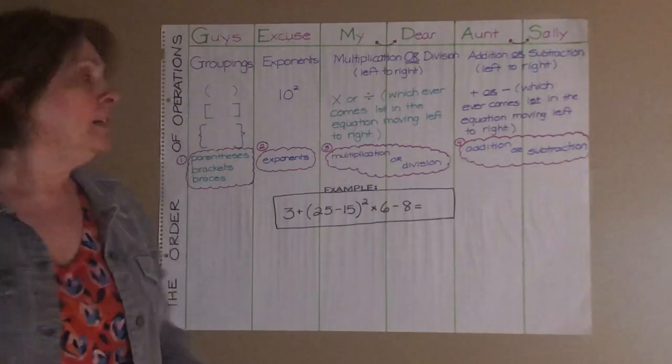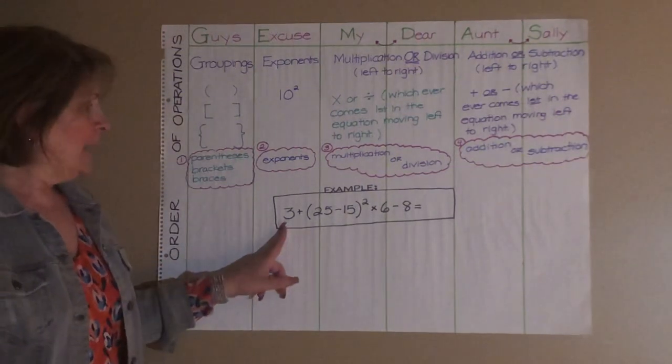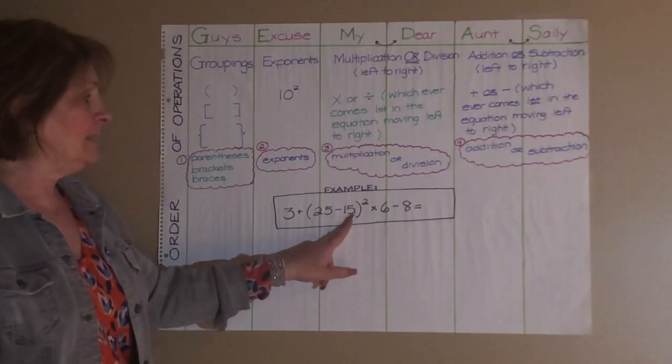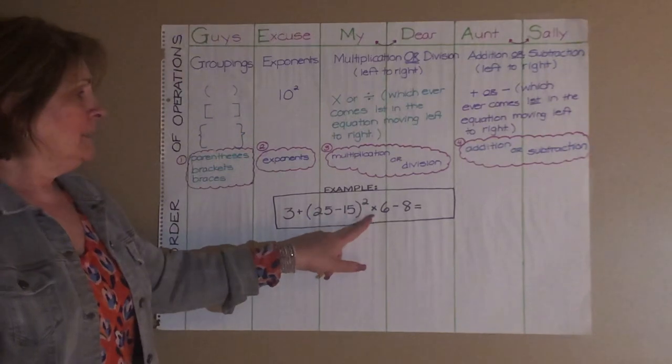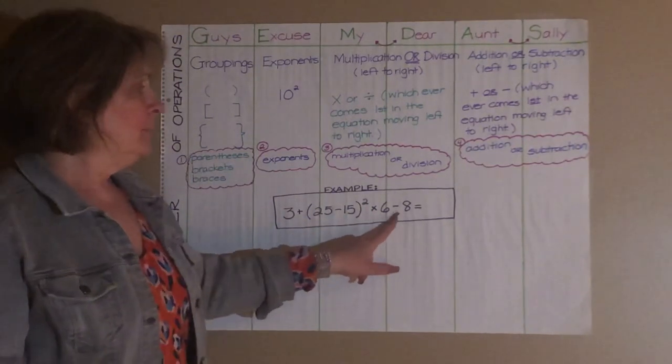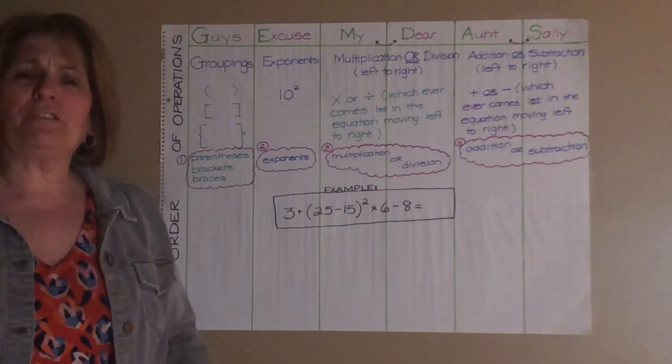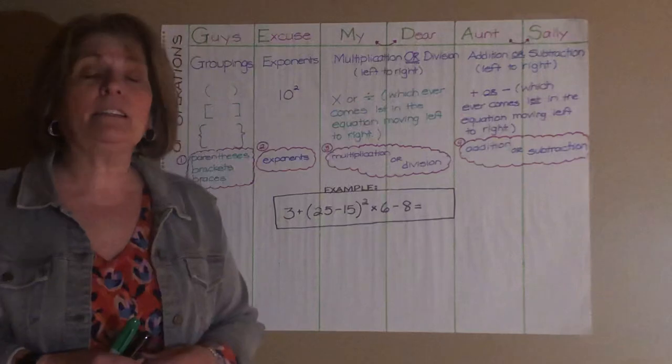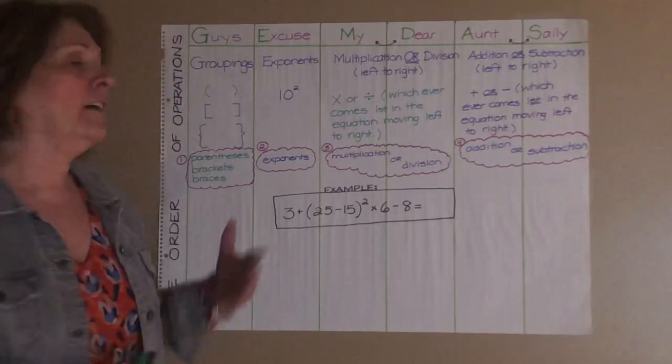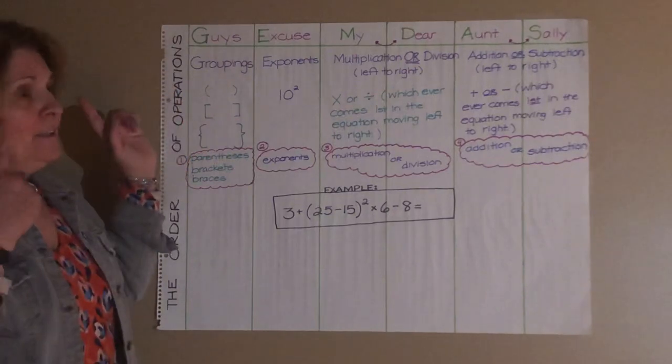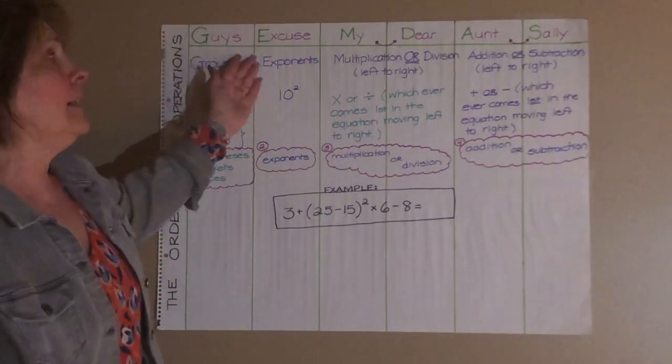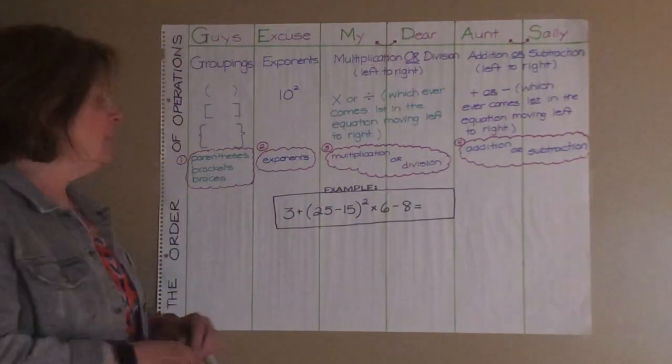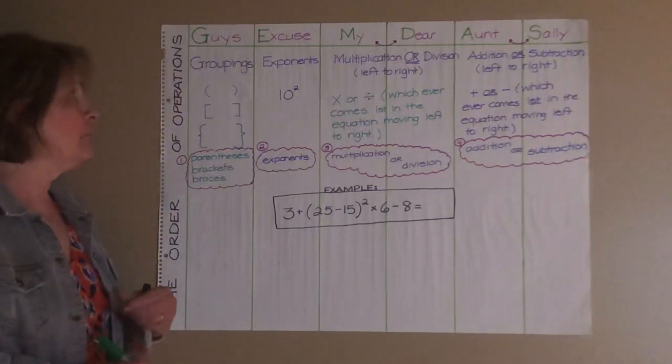What does all that mean? Well, let's look at an equation. Here we have 3 plus parentheses 25 minus 15, an exponent of 2 times 6 minus 8. So there's lots of different ways we can attack this example. But because we have the convention of our order of operations using the phrase, guys, excuse my dear Aunt Sally, we know exactly what to do. So let's take a look at what that looks like when we're solving an equation.